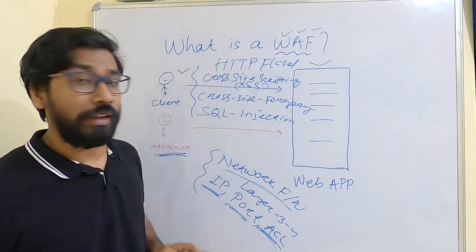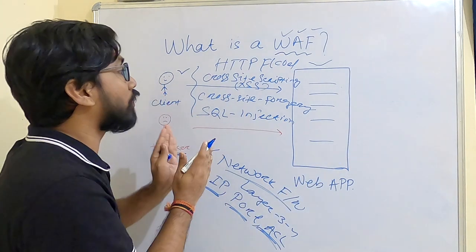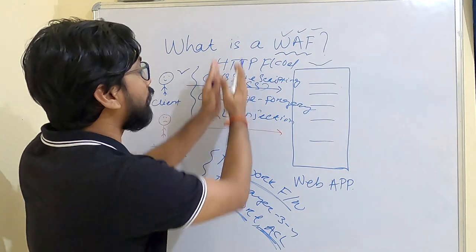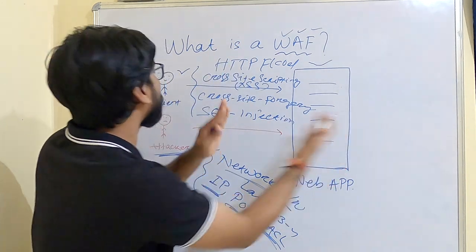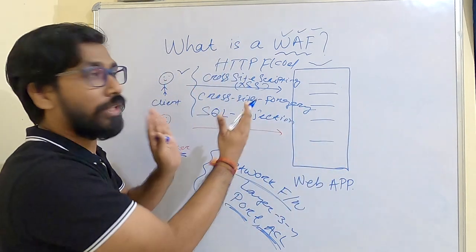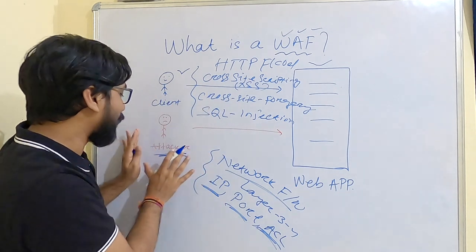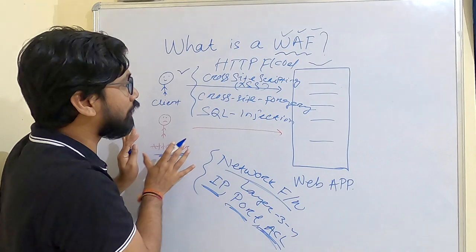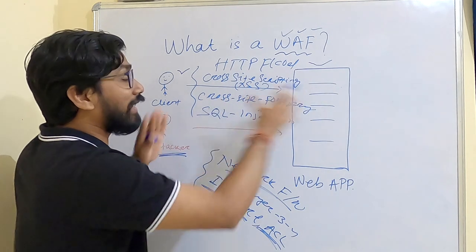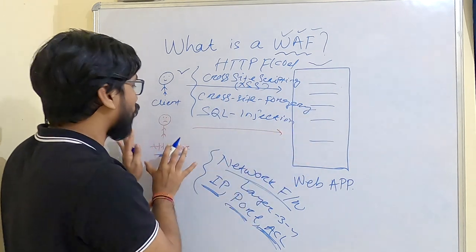This reverse proxy is deployed between your web application and the internet, so that attackers cannot access your web application with these types of attacks like HTTP flood, cross-site scripting, cross-site request forgery, and SQL injection.